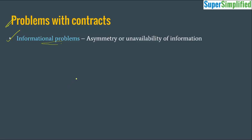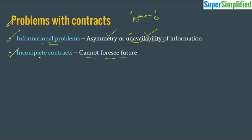Contracts have some inherent problems. One is the informational problem: the asymmetry and unavailability of information. The transacting parties sometimes face asymmetry of information, meaning one party has more information than the other. It is difficult to execute or design a contract properly under this challenge. Since we cannot foresee the future, all contracts are more or less incomplete. Conflict of interest and different incentives for different parties are also key issues.